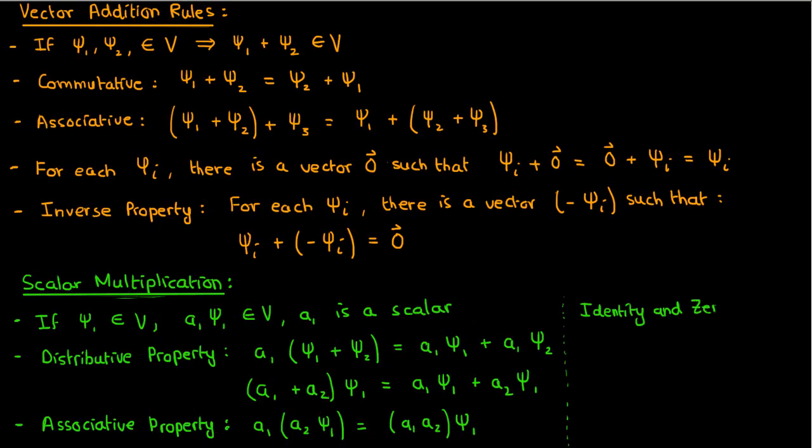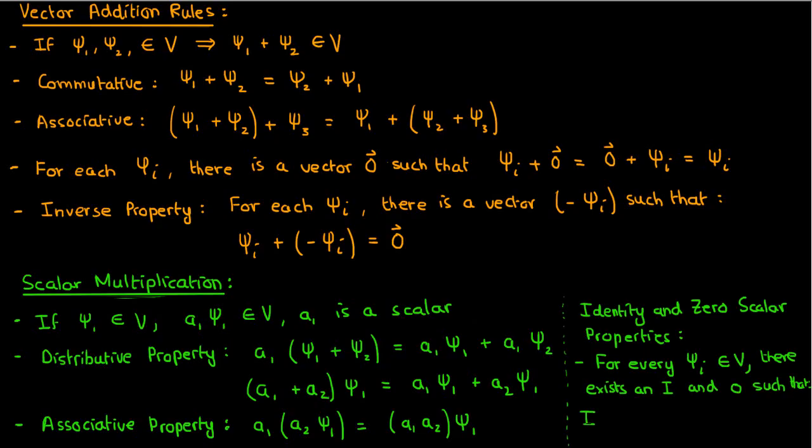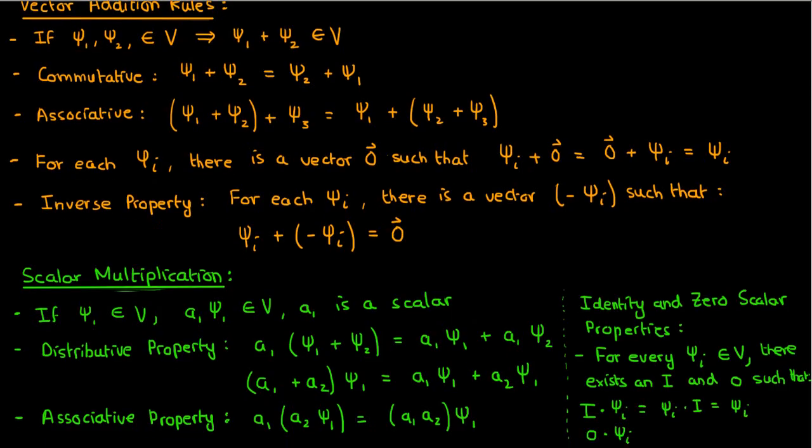And finally we have the identity and zero scalar properties. So for every psi in the set V, there must be a unitary scalar i and a zero scalar zero, such that i times psi equals psi times i which is psi, and zero times psi equals psi times zero which is the zero vector.